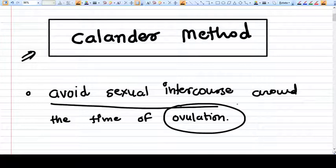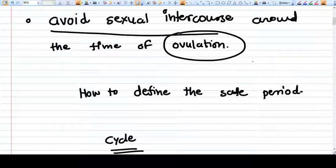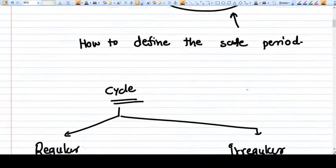Because ovulation is the essential thing when the ovum comes into the tubes ready for fertilization. If in this time the couple have sexual intercourse, then the sperm will go and pregnancy will occur. So what we need to do is avoid sex during the time of ovulation. Now the next step is we need to assume the time of ovulation.